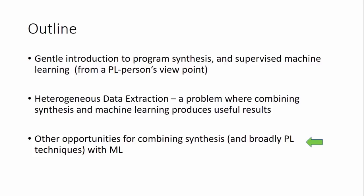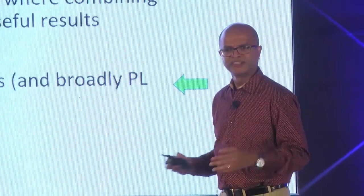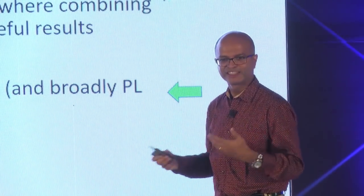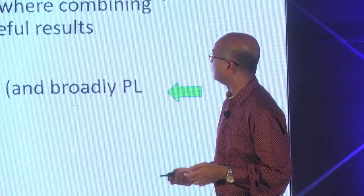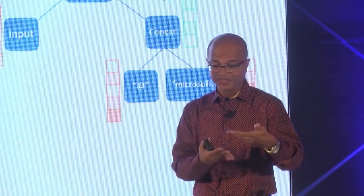That concludes the second part of my talk. In the next five to ten minutes, let me show you other opportunities at the intersection of programming languages and machine learning. I'll go through three or four examples — there's a huge amount of work going on. The first is work by two of my colleagues at MSR India, Pratik Jain and Nagarajan Natarajan, who have independently been working with Sumit Gulwani on using machine learning to prune the search space that Prose is searching.